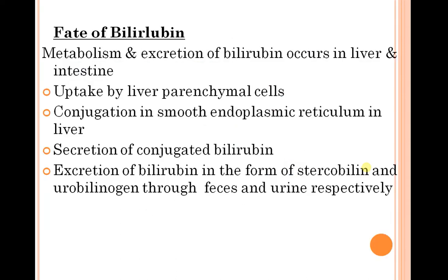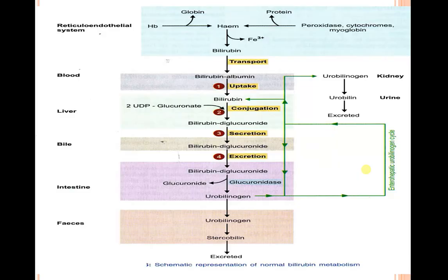What is the fate of bilirubin? The metabolism and excretion of bilirubin occurs in the liver, with uptake by liver parenchymal cells, conjugation in the smooth endoplasmic reticulum, and secretion of conjugated bilirubin. Bilirubin is excreted as stercobilinogen in feces and urobilinogen in urine.